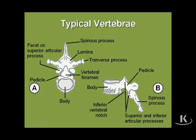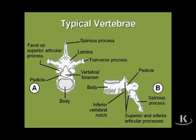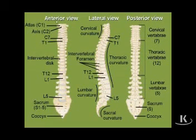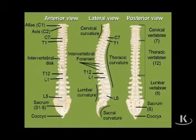The spinous process projects posteriorly, and muscles attach to that as well. There are also processes coming off the top and bottom of the vertebra, better seen on a lateral view — these are the articular processes that allow for the formation of joints between adjacent vertebrae. When we put these individual vertebrae together, we end up with the vertebral column, seen here in an anterior view.